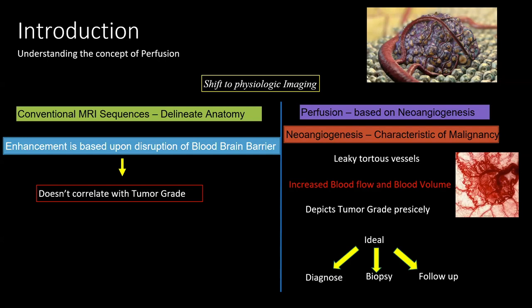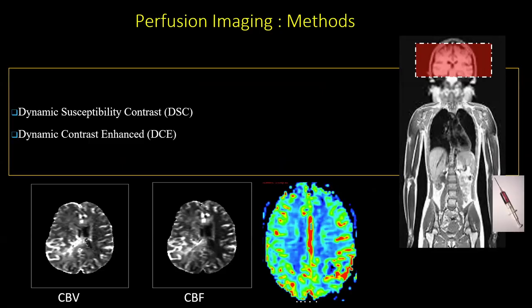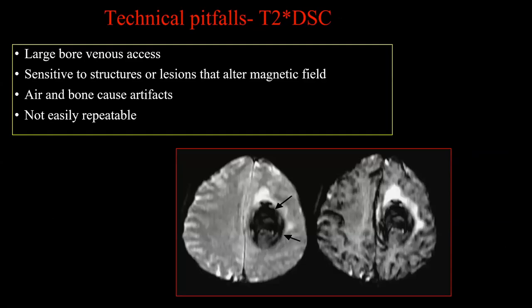Even for post-treatment follow-up, this is a more sensitive technique. There are various ways in which perfusion imaging can be performed. The most commonly used techniques are DSC and DCE perfusion — dynamic susceptibility contrast and dynamic contrast enhanced. Both these techniques require contrast injection in a particular way and at a specific injection speed. For DSC perfusion, a very high-speed contrast injection — around 10 ml in 2 seconds — is required, and a large bore venous access is needed, which might not be possible in all patients.